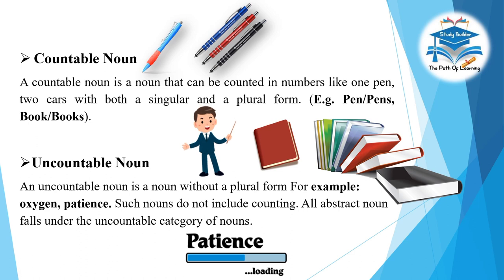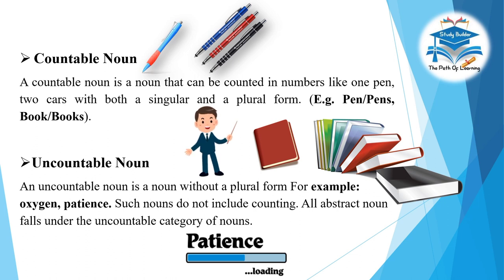Countable noun: A countable noun is a noun that can be counted in numbers, like one pen or two cars, with both a singular and a plural form — for example: pen/pens, book/books. Uncountable noun: An uncountable noun is a noun without a plural form — for example: oxygen, patience. Such nouns do not include counting. All abstract nouns fall under the uncountable category.